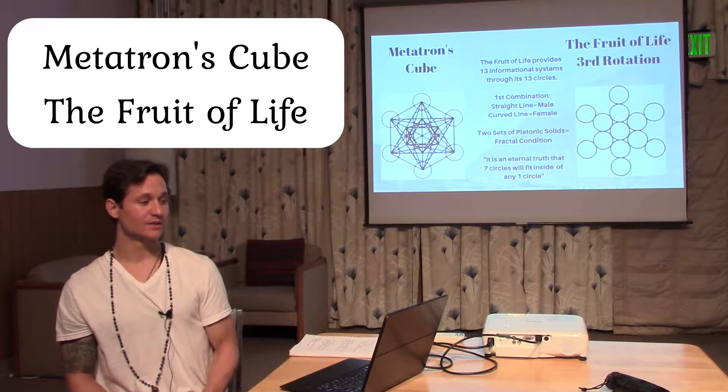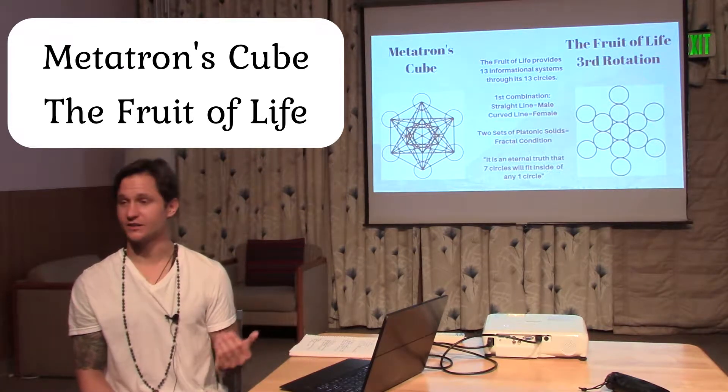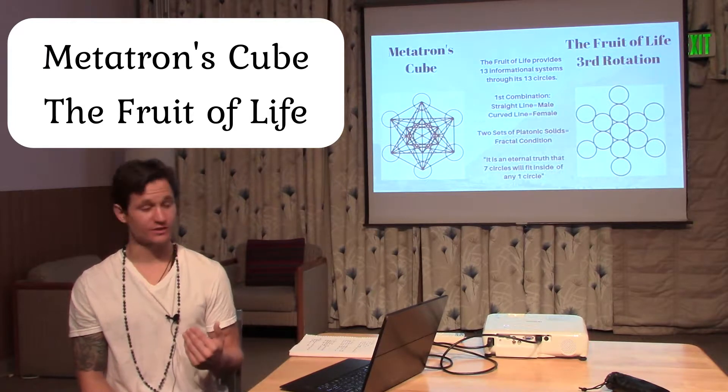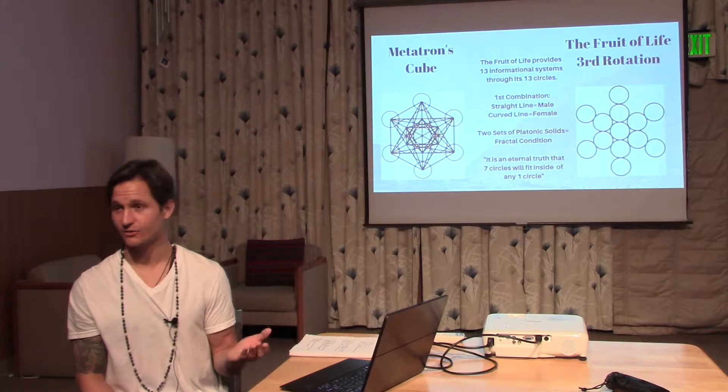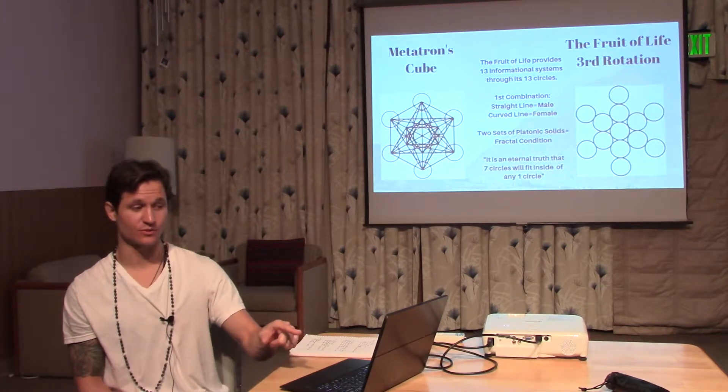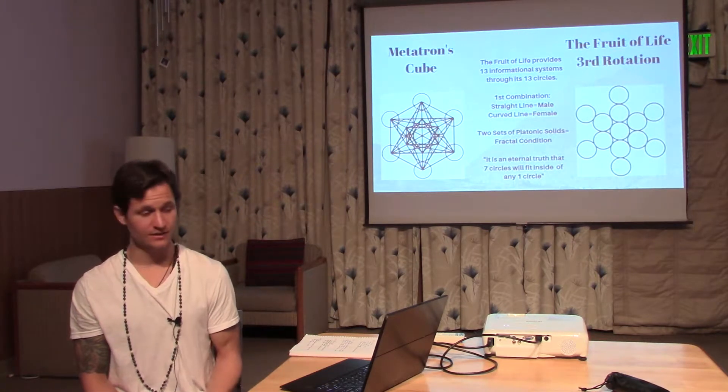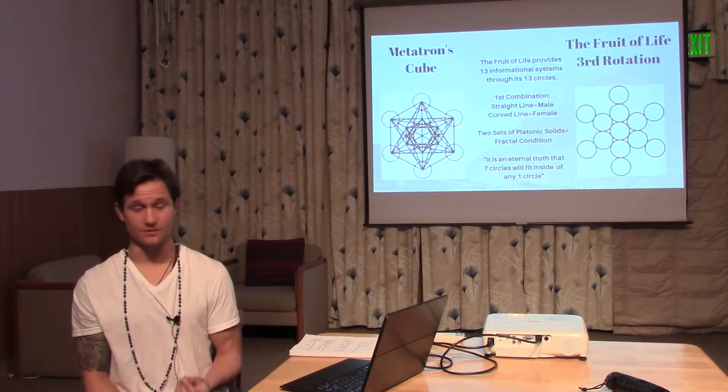The platonic solids come from Metatron's cube. Metatron's cube comes from the third rotation of the flower of life, which is this image on the right called the fruit of life. I'll explain what the rotations mean in a moment.